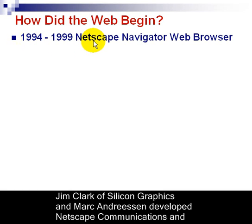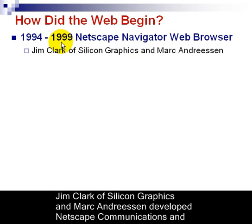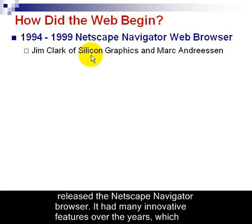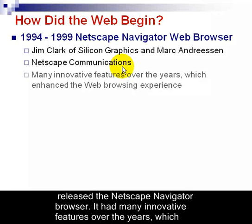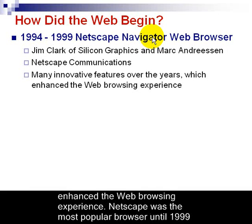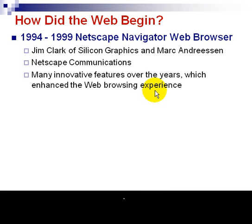In 1994, the Netscape Navigator Web browser first emerged, and it was up until about 1999 that it was the most popular browser. Jim Clark of Silicon Graphics and Mark Andreessen contracted together and developed Netscape Communications, the company who rolled out the Netscape Navigator Web browser. Over the years, this browser started introducing many newer features which enhanced the web browsing experience, including newer versions of HTML, which allowed us to see color and different layouts.